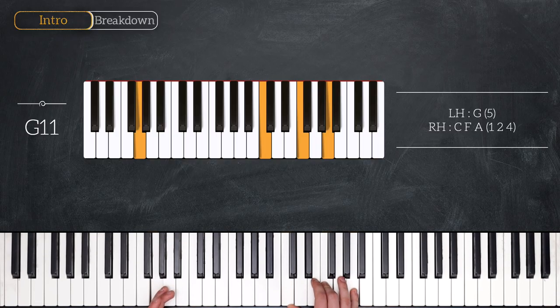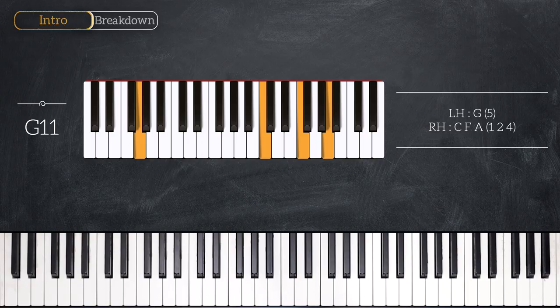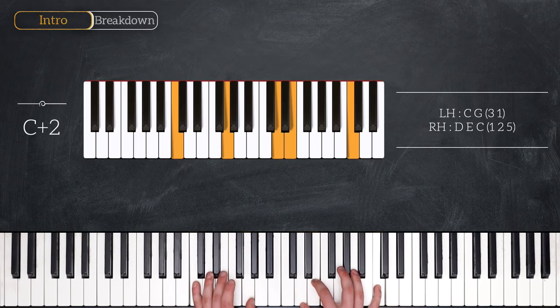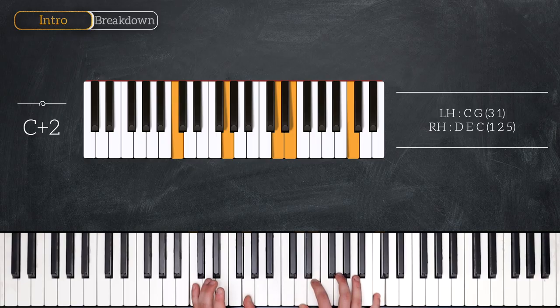And you can think of this as F major over G. Then we have C add 2. You can also call this C add 9. C and G in the left hand, D, E, C in the right hand.